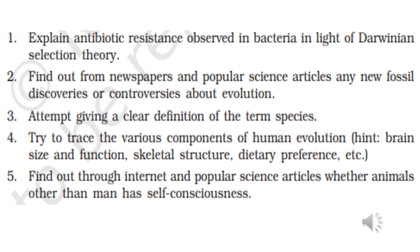Homo sapiens have four curves in the vertebral column and are orthognathus — meaning a face without a projecting jaw. The forehead is broad, chin is well developed, and they walked on the sole of the foot.